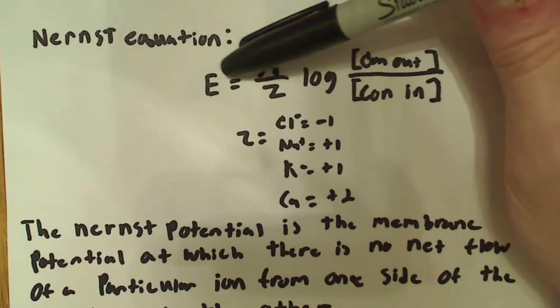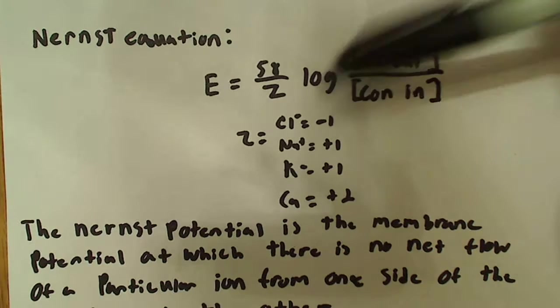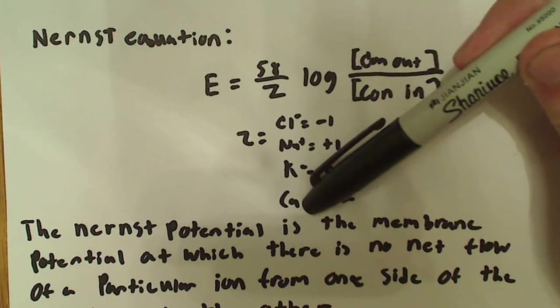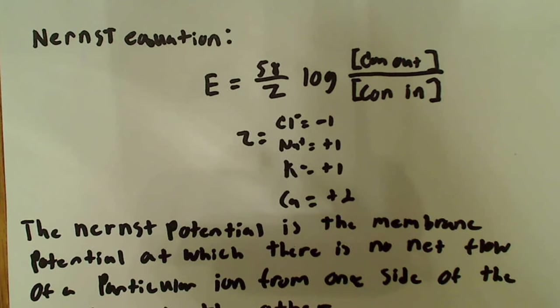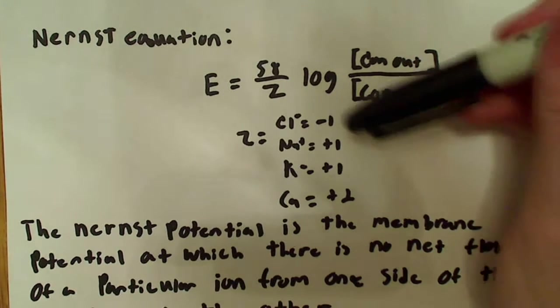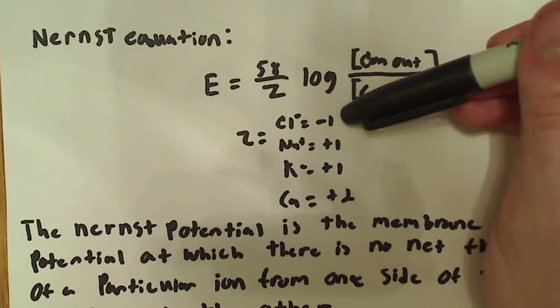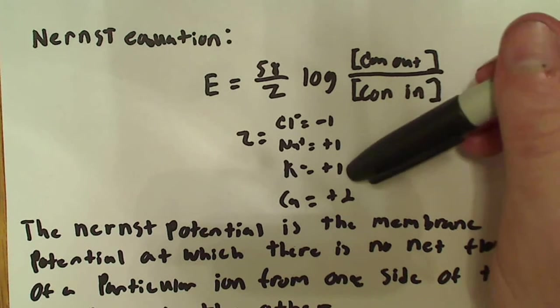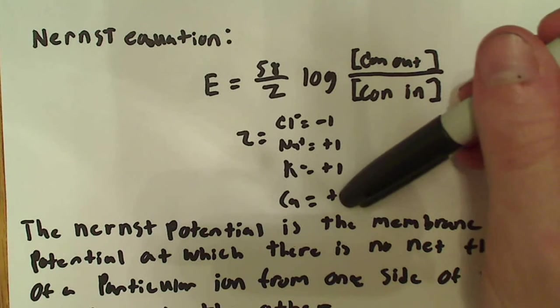So this equilibrium potential can be for any of these: Cl chloride, sodium, potassium, calcium, whatever. Any of those would be fine, and Z on the bottom here is equal to whatever the charge is on a particular ion. So, in this case, negative 1 for chloride, plus 1 for sodium, plus 1 for potassium, plus 2 for calcium.